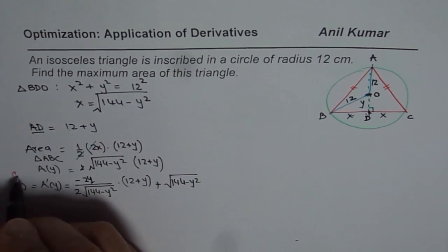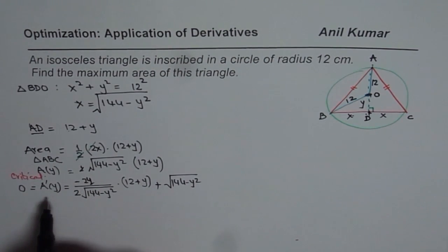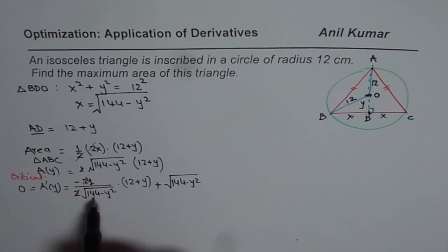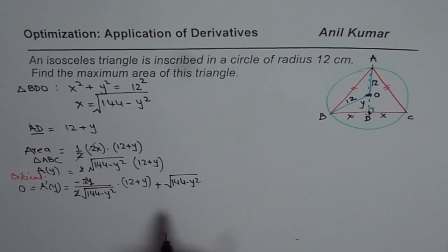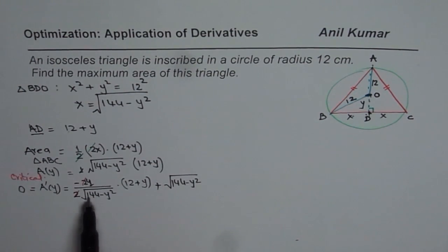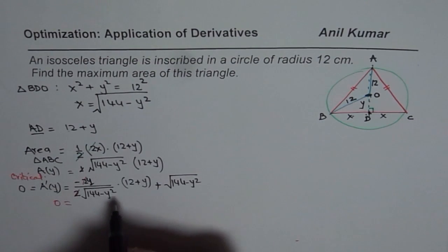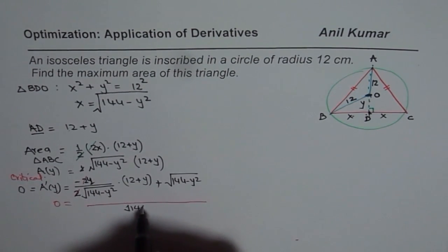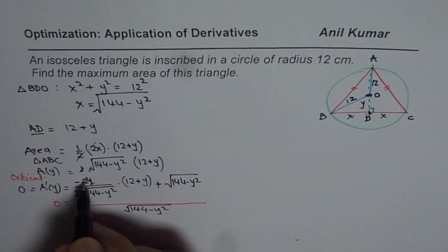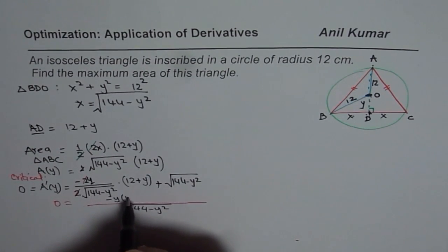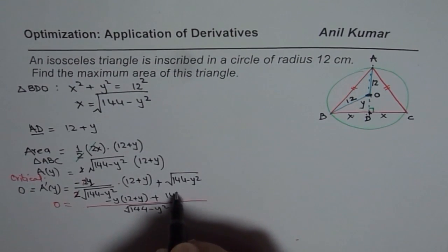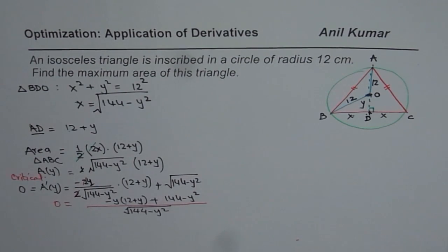We multiply through and take a common denominator of (144 minus Y²). In the numerator we have minus Y times (12 plus Y) plus (144 minus Y²).